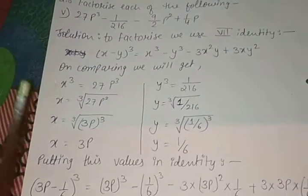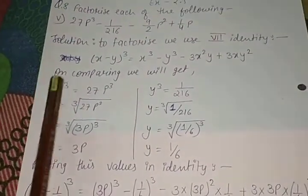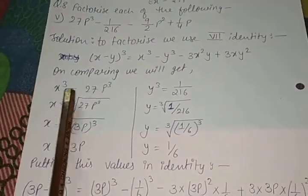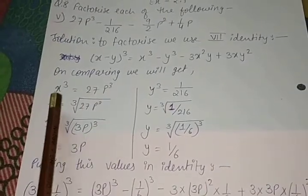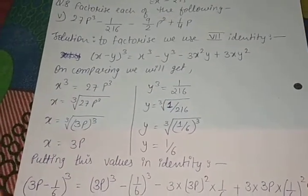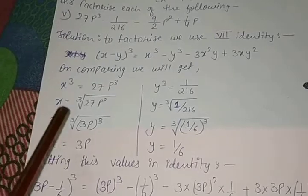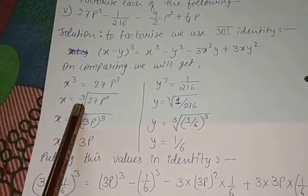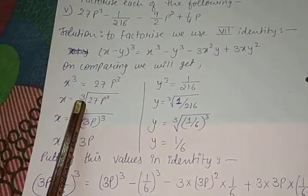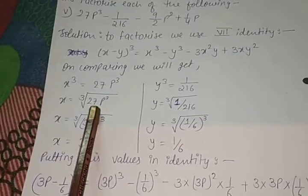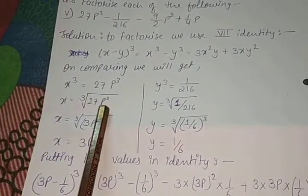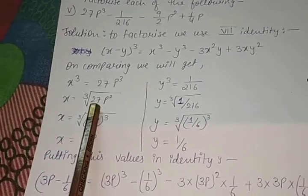So on comparing, this is our identity first term, this is our polynomial first term. x³ = 27p³. If we transpose the cube to the right hand side, it will be converted into the cube root. That means x = ³√(27p³). So the cube root of 27 is 3 and the cube root of p³ is p.